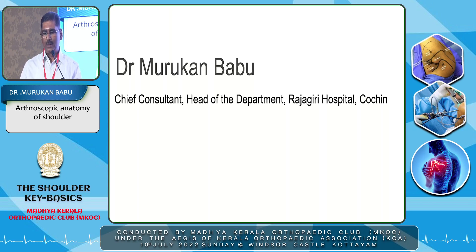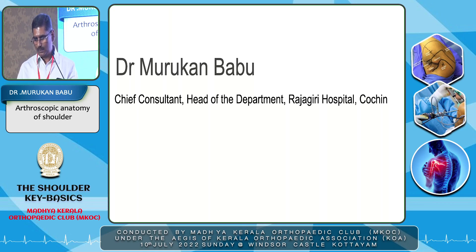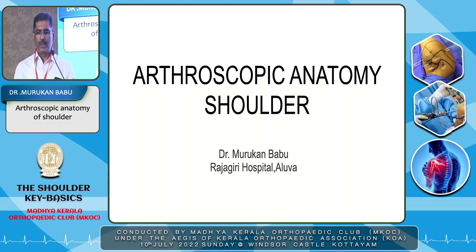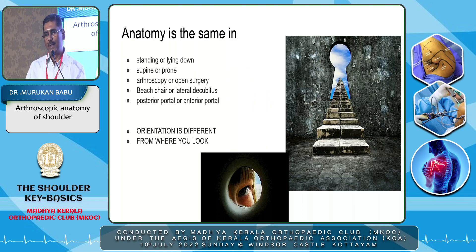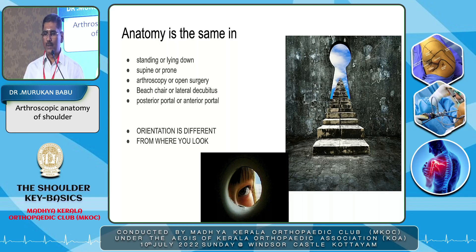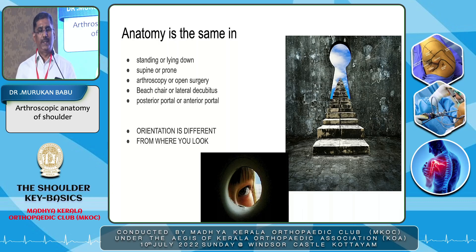My topic is arthroscopic anatomy of the shoulder. The anatomy is the same whichever position the patient is in — standing, lying down, supine, or prone — whether you are doing arthroscopy or open surgery. In shoulder CMEs, whether in beach chair or lateral decubitus position, whether looking through the anterior portal or the posterior portal, the anatomy is the same, but the orientation is different.